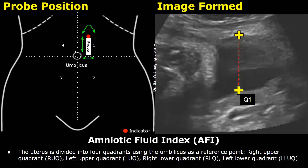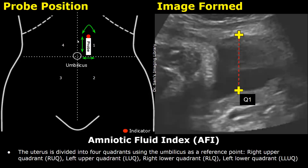This round structure is the umbilicus and down here is the symphysis pubis. This white box is the ultrasound probe, and this red dot is the indicator or orientation marker. For calculating the amniotic fluid index, the uterus is divided into four quadrants using the umbilicus as a reference point. Imaginary horizontal and vertical lines pass through the umbilicus and divide the abdomen and pelvis into four quadrants.